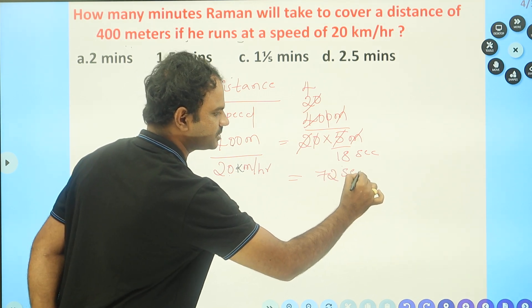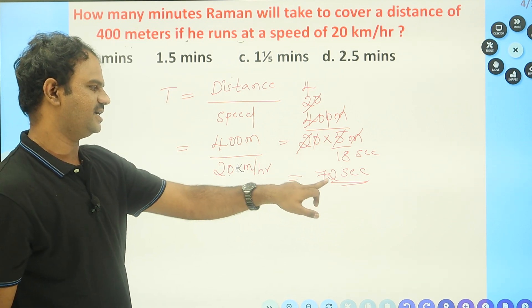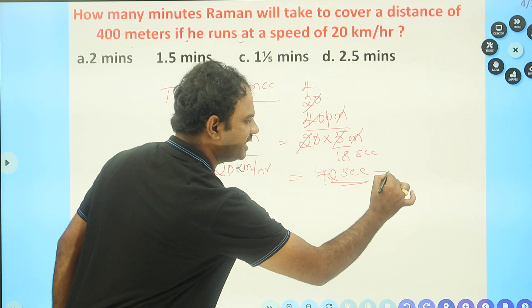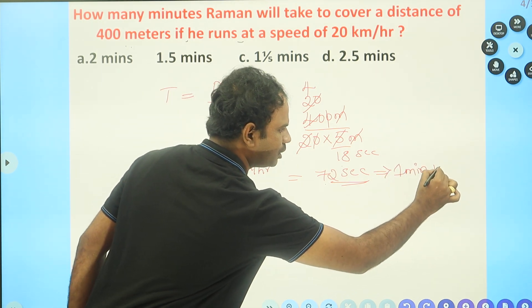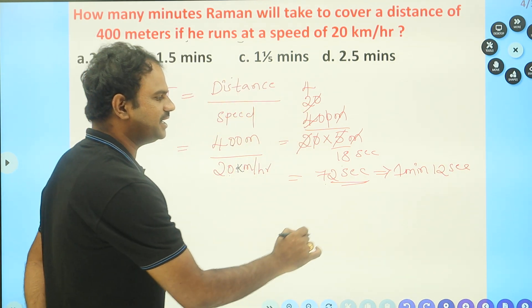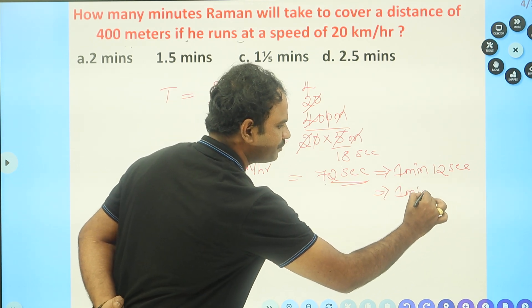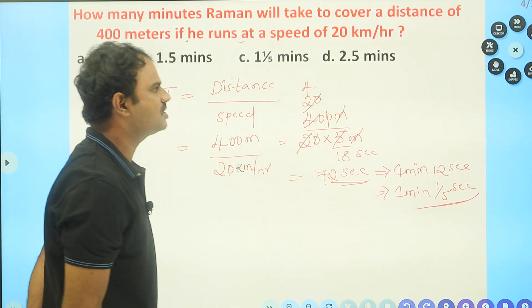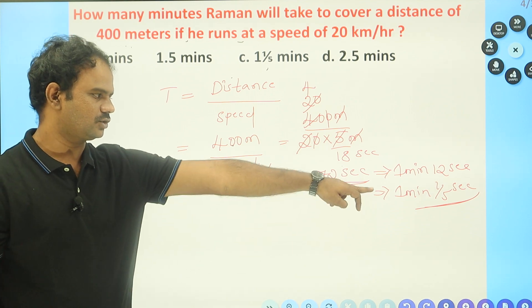He can cover this distance in 72 seconds. How many minutes is that? 72 seconds can be written as 1 minute and 12 seconds, or we can write it as 1 and 1/5 minutes. So the answer is 1 and 1/5 minutes.